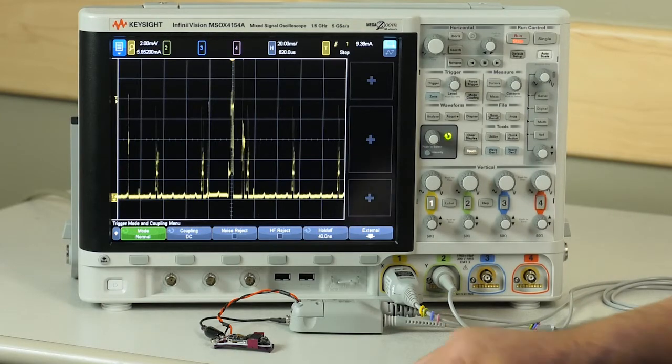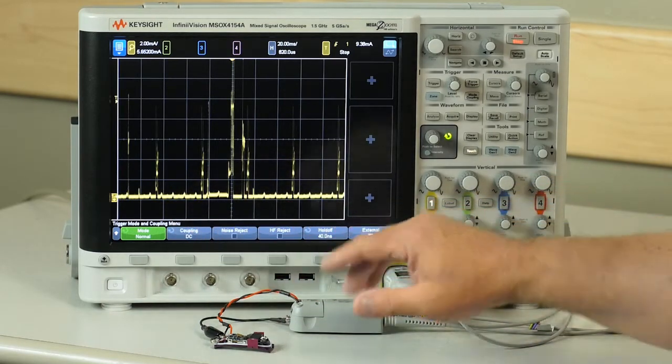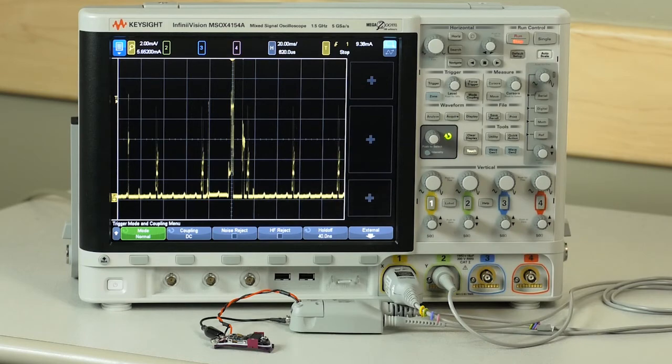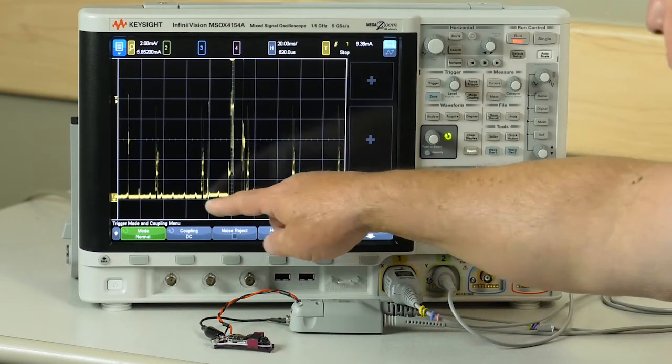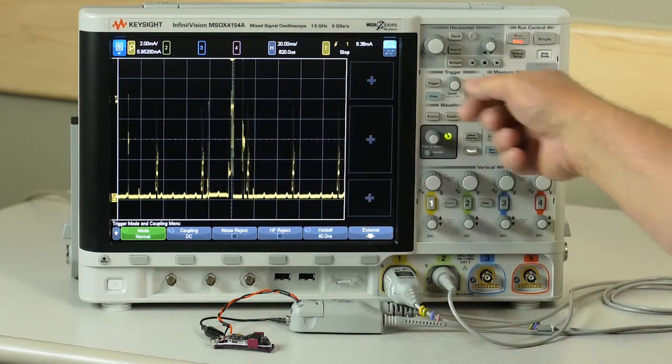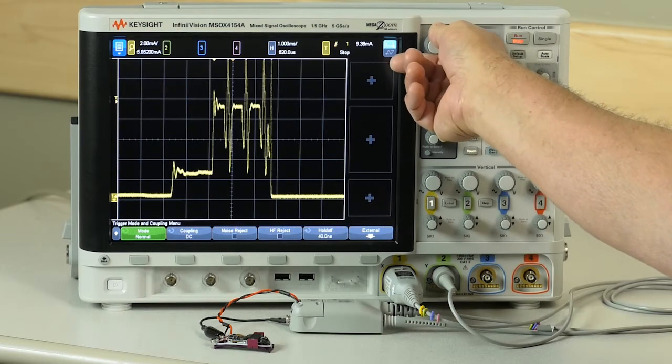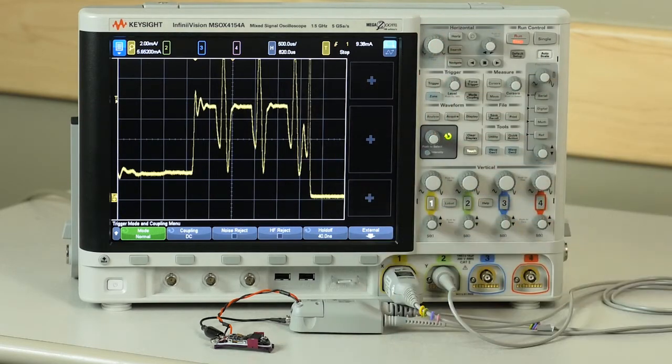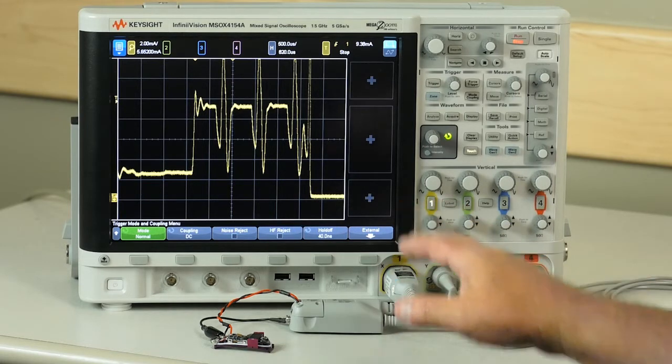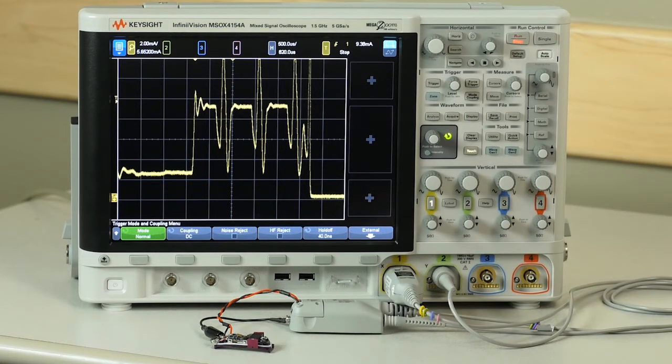In this example, you can see along the bottom here very low current pulses happening. And then very intermittently, we have very tall activity. Using the oscilloscope, I can go in and characterize that very accurately and see exactly what's being measured on this device.